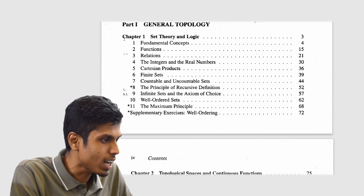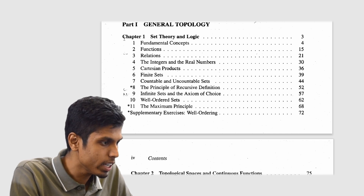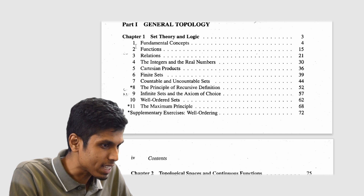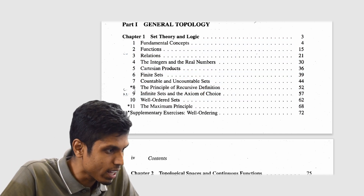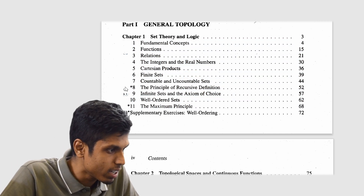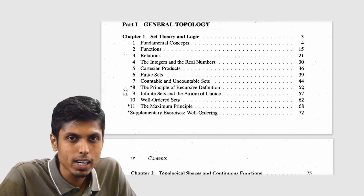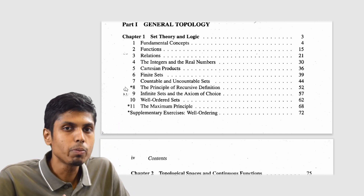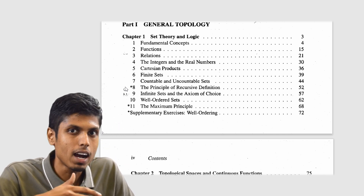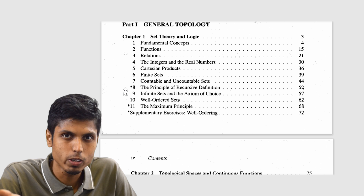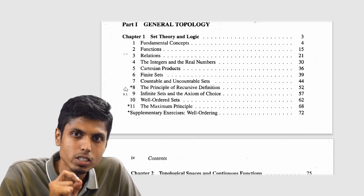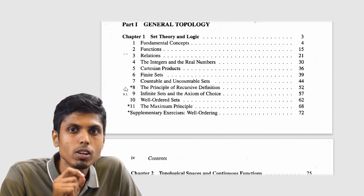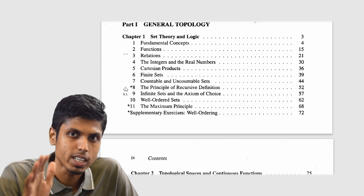You can start with chapter 1 and read all the subsections. There are a few asterisks — for example, section 8, section 11, and supplementary exercises are marked with asterisks. You can skip them, but it's your choice. The asterisks denote that even if you skip, you will be continuing the flow of the chapter.